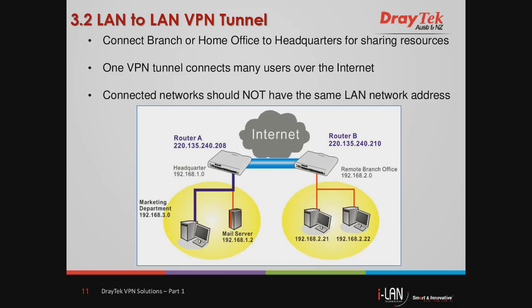In this mode, only one VPN connection is created and all staff at the branch office can access head office services at the same time. Head office staff can also access branch office services. One requirement is that the two networks should not have the same LAN network address. As shown in the example, Router A — the headquarters on the left — is configured as the VPN server and has LAN IP subnets of 192.168.1.0 and 192.168.3.0, while Router B — the remote branch office on the right — is configured as the VPN client and has LAN IP subnet of 192.168.2.0, which is different from the Router A network.